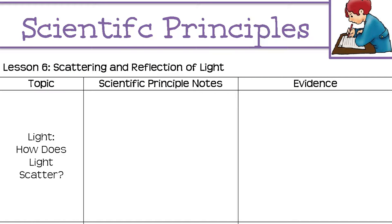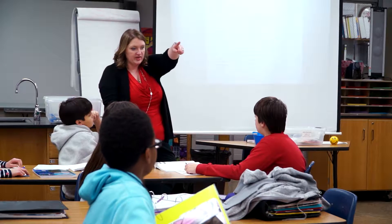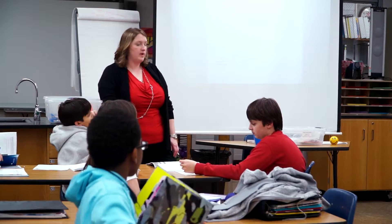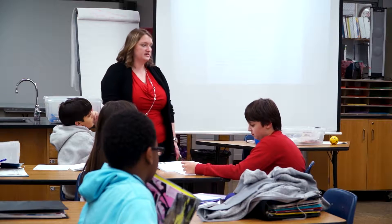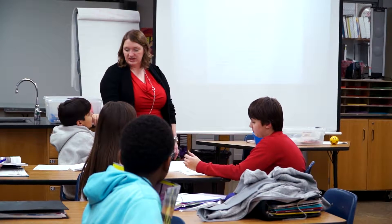In the box that says 'scientific principle notes,' talk as a group and come up with some bullets — some ideas you think should go on our scientific principle board. This is about the how and the why: what do we know about light scattering, what actually happens, and why does the light scatter? Put it into statements together.